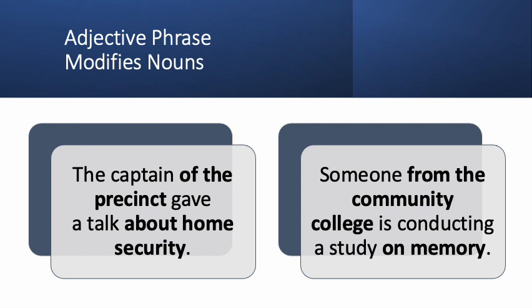Let's look at some examples of adjective phrases. 'The captain of the precinct gave a talk about home security.' About home security is modifying — it tells us what type of talk. 'Someone from the community college is conducting a study on memory.' On memory is a prepositional phrase telling us what type of study they're conducting.